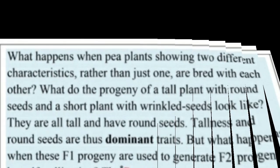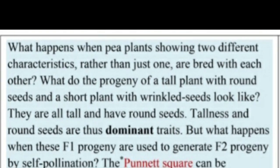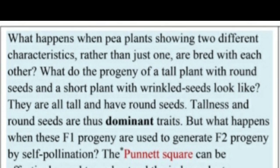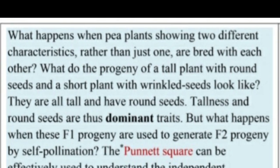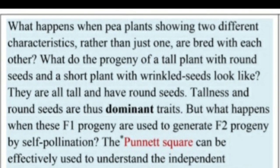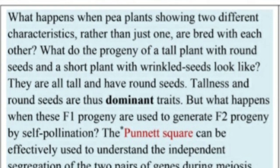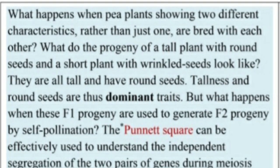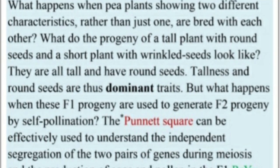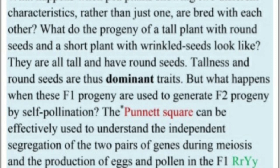What happens when a pea plant shows two different characteristics rather than just one, and they are bred with each other? What do the progeny of a tall plant with round seeds and a short plant with wrinkled seeds look like? They are all tall and have round seeds — tallness and round seeds are thus dominant.